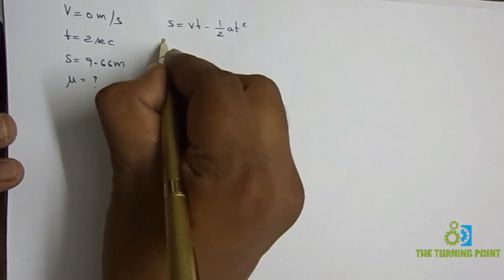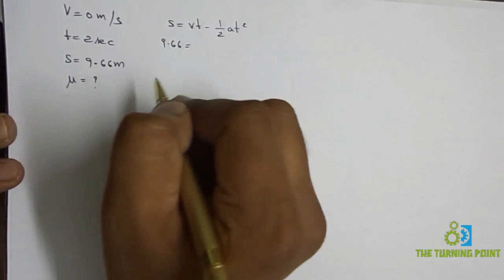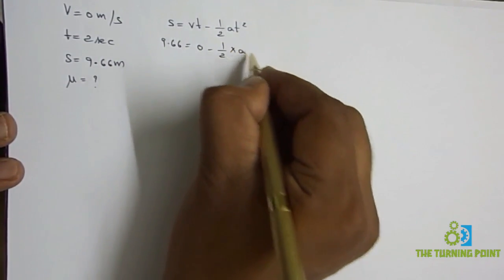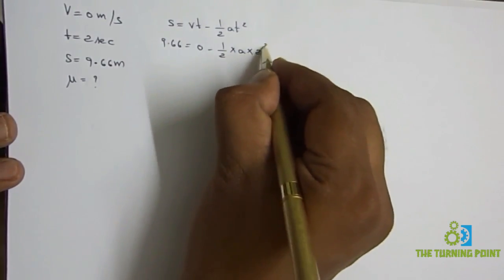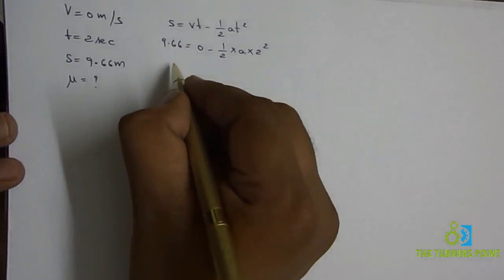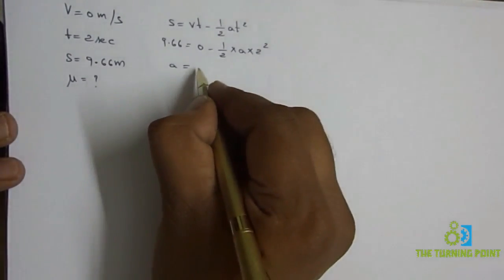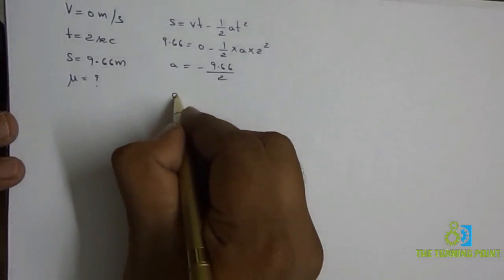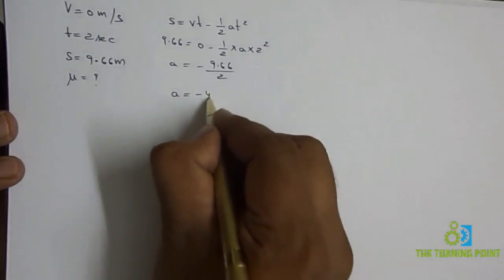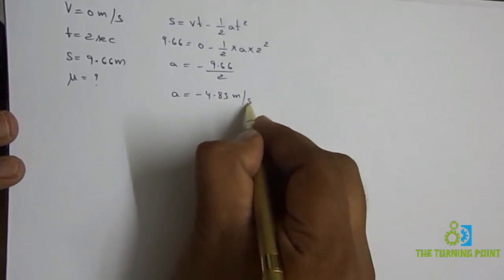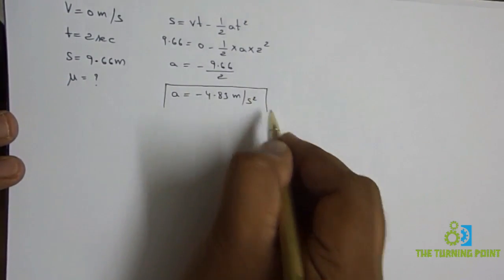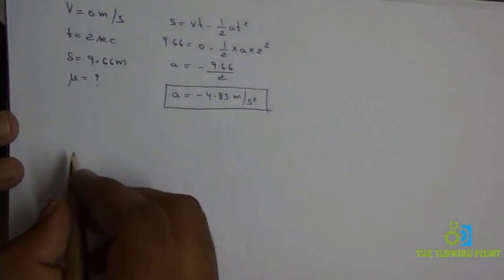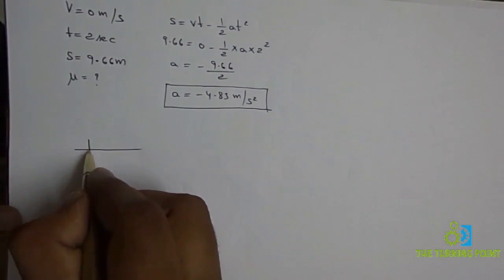Using s = vt − ½at²: the distance is 9.66 meters, the final velocity is 0, so 9.66 = 0 − ½ × a × (2)². Solving for acceleration gives a = −9.66/2 = −4.83 meters per second squared.